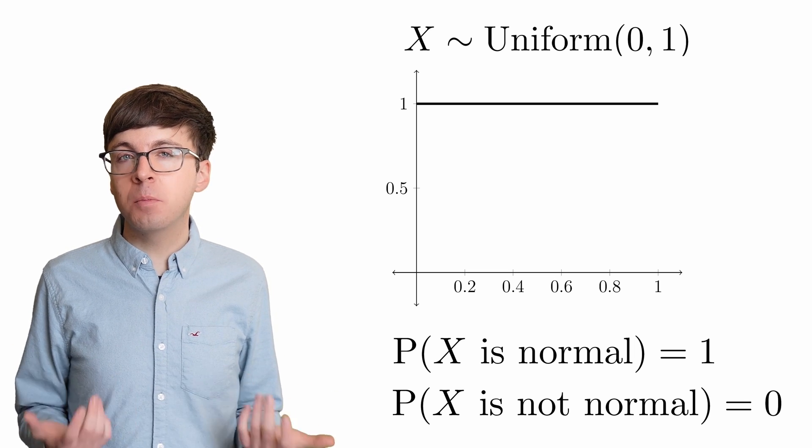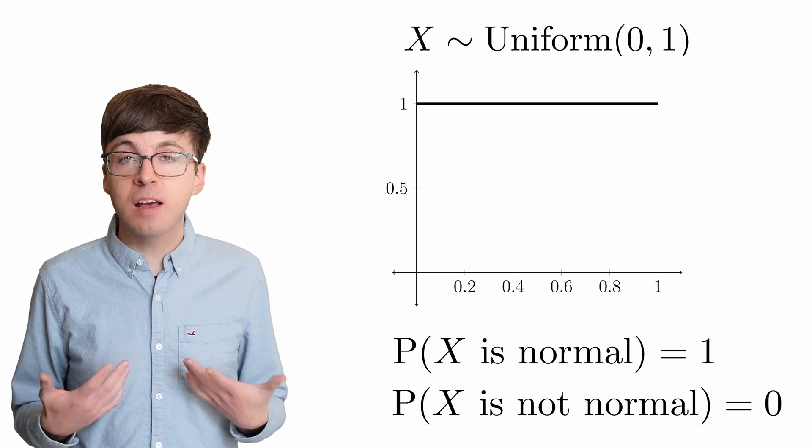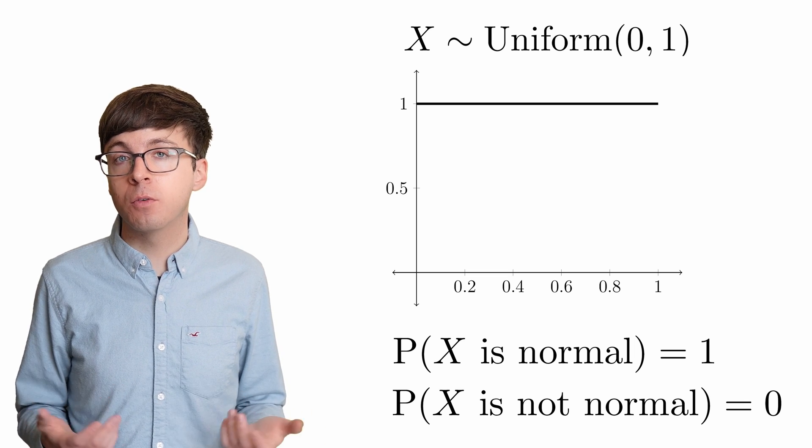This might give us some confidence that numbers like pi or the square root of 2 are normal, since the vast majority of real numbers are normal.